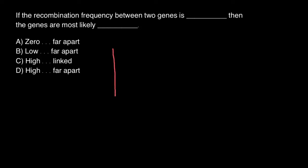Imagine that we have one chromosome and another homologous chromosome. Here, for example, we have gene A, which is dominant capital, and on another chromosome in the same locus, we have recessive allele A. And this chromosome has dominant allele B here, and in the same locus, another homologous chromosome has recessive allele B.